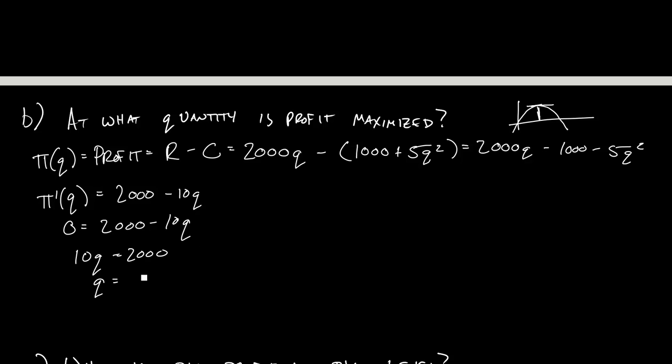And then so I'll have Q equals 200 pounds. And so to make sure this thing is a maximum, you'd want to do the first derivative test or the second derivative test. I'll do the first derivative test here. So at Q equals 200, to the left of it, if you plug it into here, you will get a negative number. And then to the right of it, you would get a positive number. I'm sorry. On the left side, you would get a positive number. On the right side, you would get a negative number. So it looks like this. And 200 is indeed a maximum.